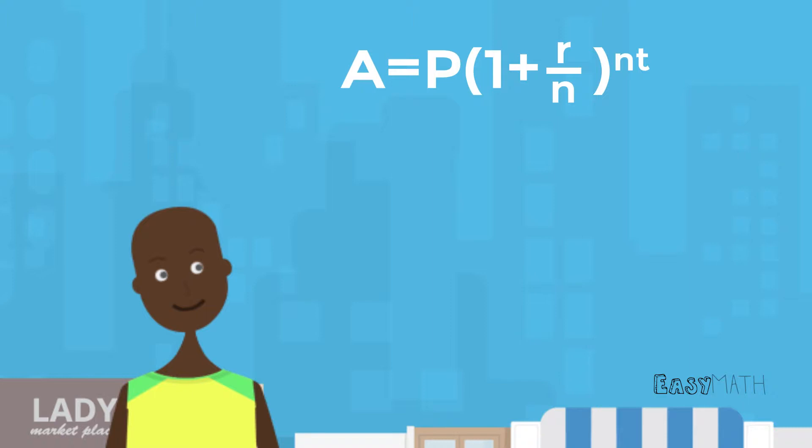Where P, the principal, is the original amount Harry owes, so $18. The R is the interest rate Harry is charged, which is 15%. Remember to move the decimal over 2 to turn the percent into a decimal.